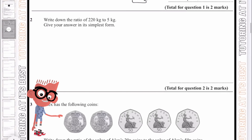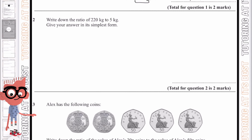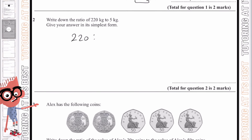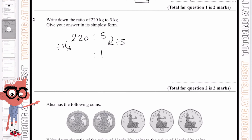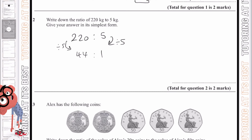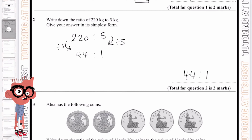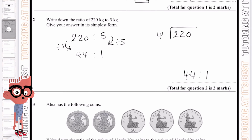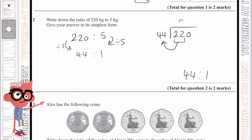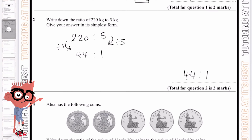Okay, question number two. Write the ratio of 220 to 5 kg in the simplest form. Again, I'm going to take 5 as my highest common factor and divide both sides by 5. We know that gives us 1, and 220 divided by 5 gives us 44. So our answer is 44 to 1. Let's just check this: 220 divided by 44 — we know that 22 is half of 44, and so that gives us 5 as our answer.